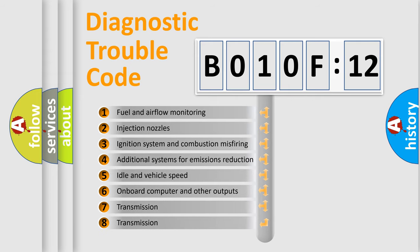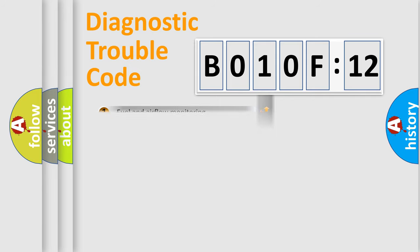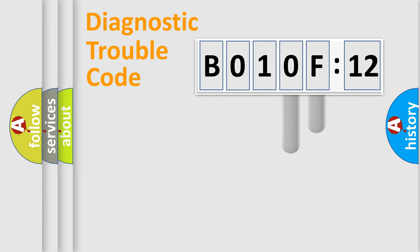The third character specifies a subset of errors. The distribution shown is valid only for the standardized DTC code. Only the last two characters define the specific fault of the group.